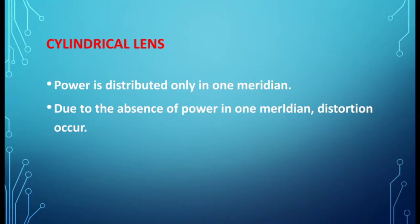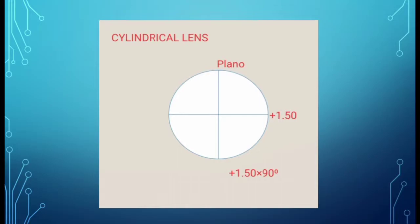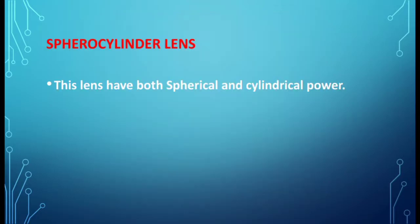Due to the absence of power in one meridian, distortion may occur because one meridian is in plano condition and the other meridian has the total power, so refraction completely occurs in one meridian. Look at the example: the lens has plus 1.50 diopter cylindrical power in one meridian; the other meridian is in plano condition — plano means absence of power.